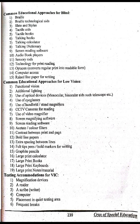Next topic: common educational approaches for low vision. Number one, functional vision; number two, additional lighting; number three, use of optical devices — monocular and binocular aids such as telescopes; use of eyeglasses; use of handheld and stand magnifiers; CCTV cameras for reading; use of video magnifier; screen magnifying software; screen reading software; color filters; contrast between print and page.